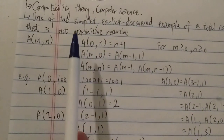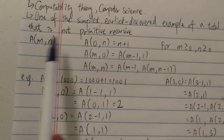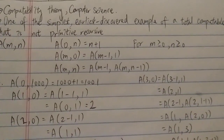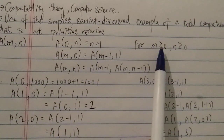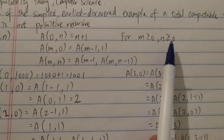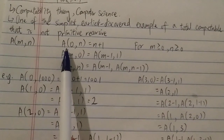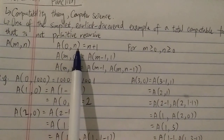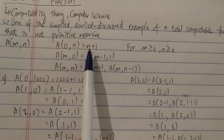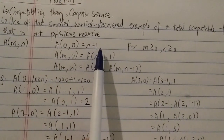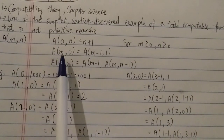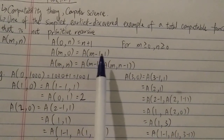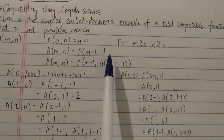How do you calculate this function? Basically there are three cases, and M and N must both be greater than or equal to zero. The first case is A(0, N), which is very straightforward — it's just equal to N plus one. The second case is A(M, 0), which equals A(M minus one, 1).